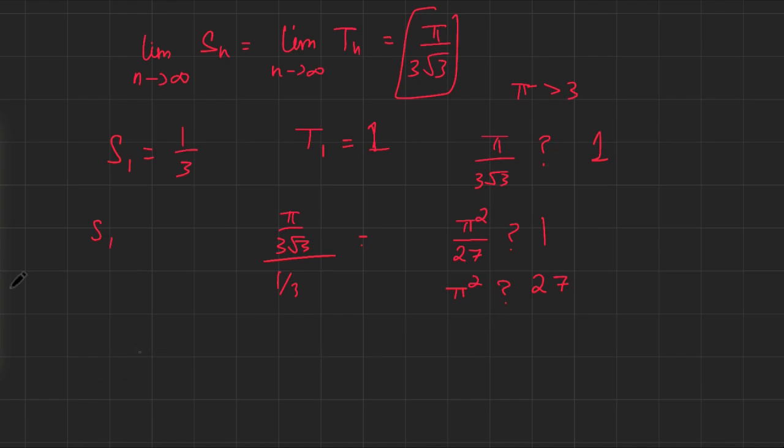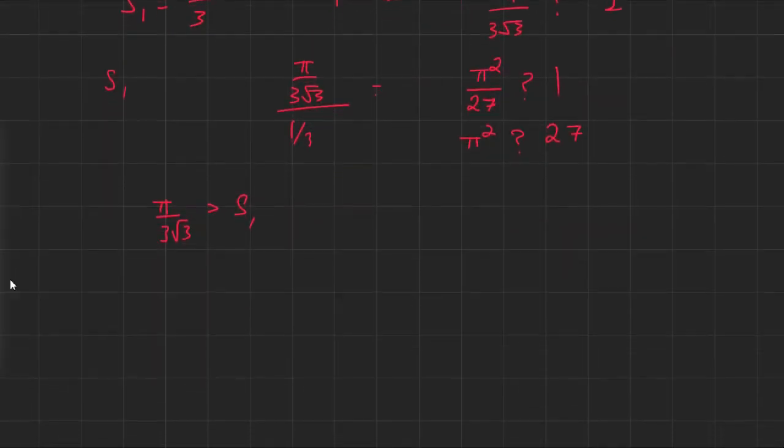So, an interesting thing now is that π over 3 root 3 is bigger than S of 1, whereas π over 3 root 3 is less than T of 1, and the limit of both of these, S of n and T of n, is π over 3 root 3.